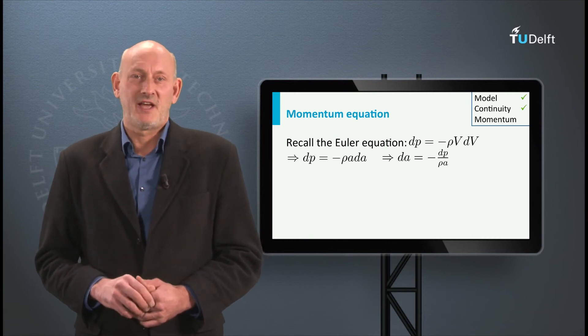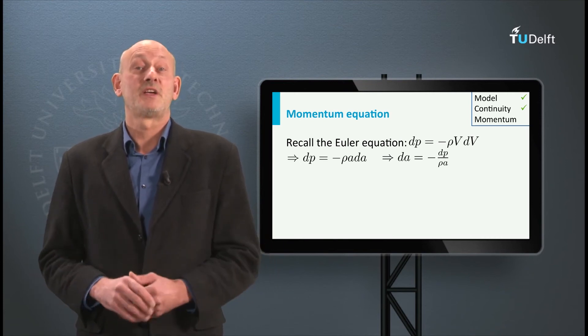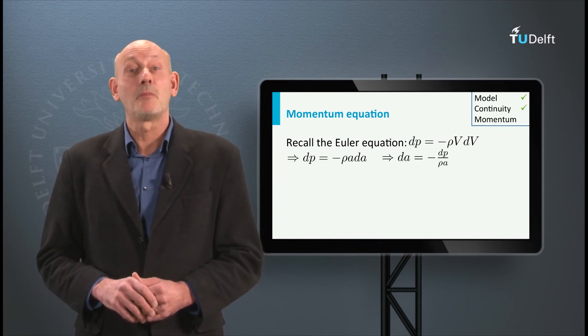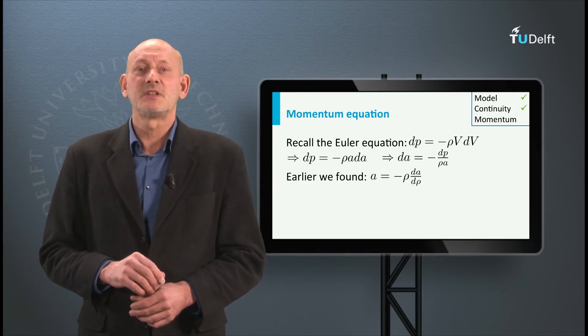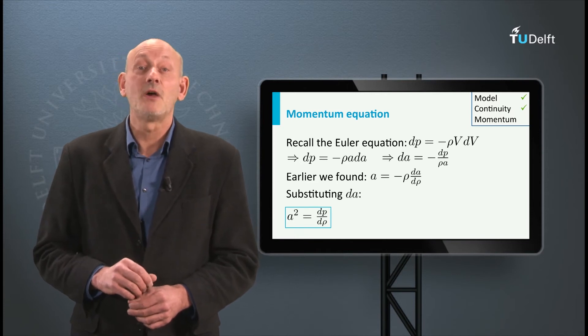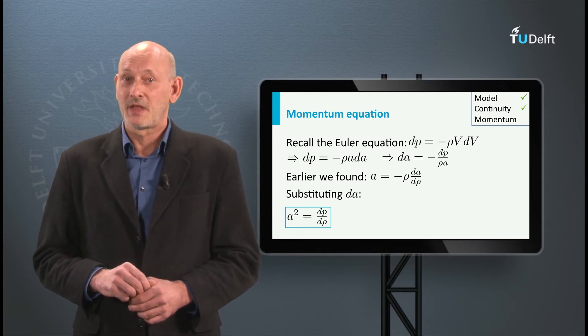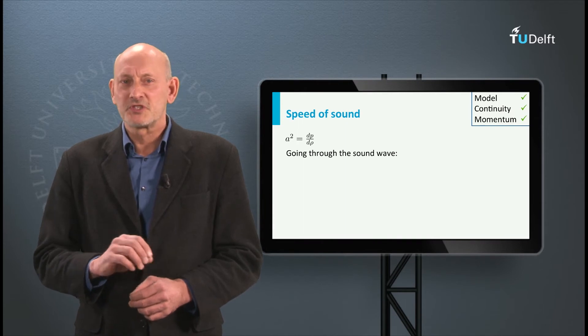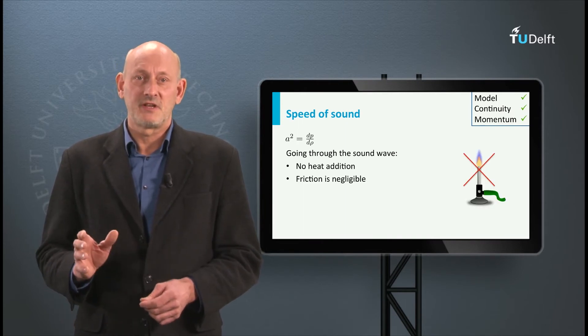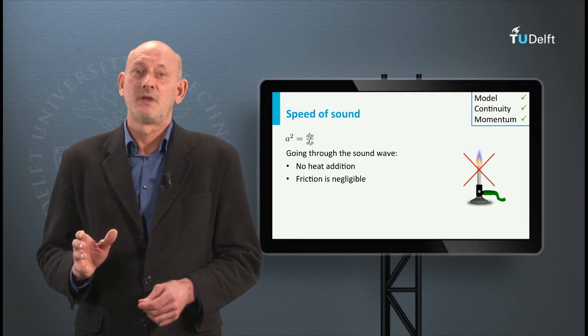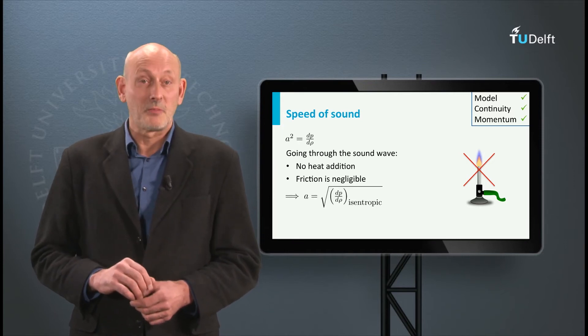We now have an expression for dA that we can substitute in the equation for A we found earlier from applying the continuity equation. This substitution leads to A squared is dP over dRho. When the gas moves through the sound wave there is no heat addition and friction is negligibly small, which basically makes this process isentropic.